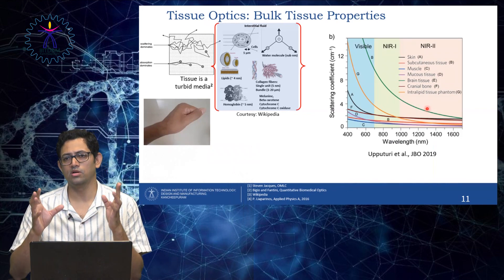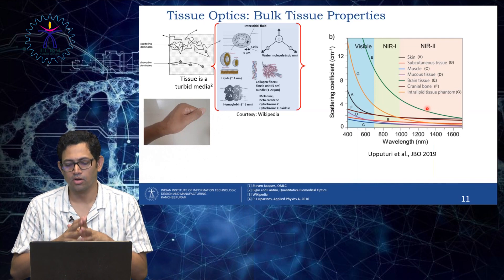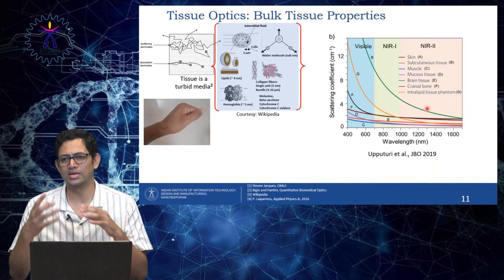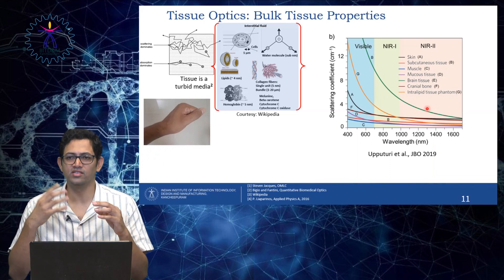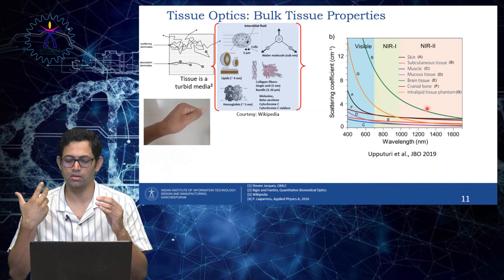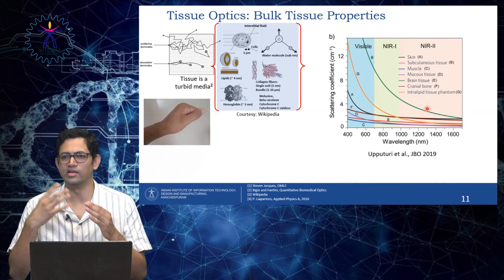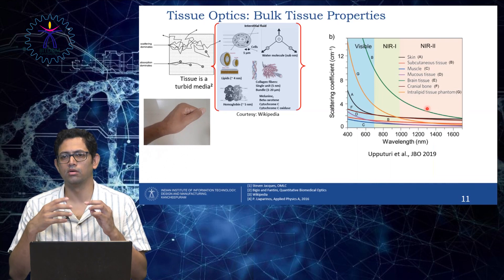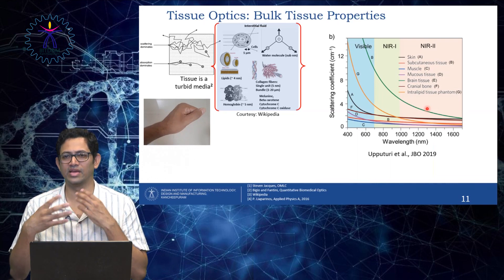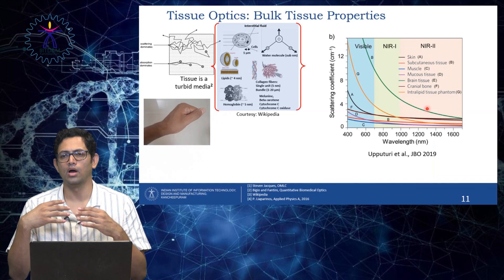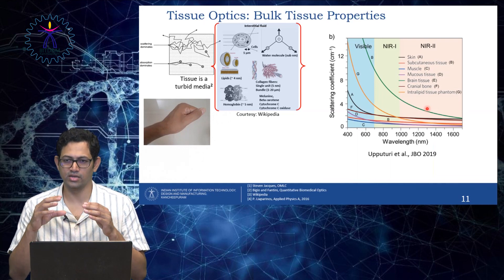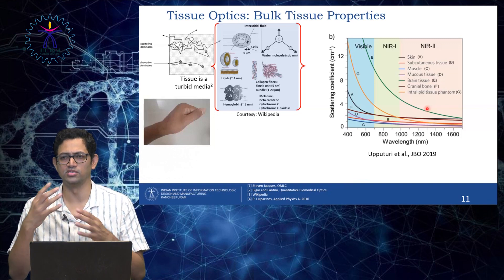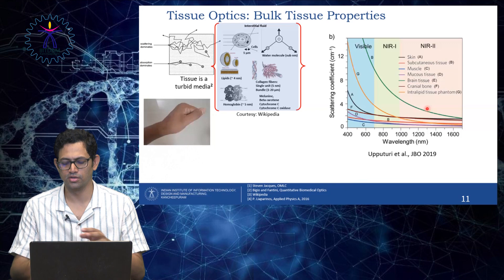That is what I wanted to cover about the scattering part of tissue optics. In the next lecture, we will talk about how to understand various optoelectronic components like lasers, LEDs, and photodiodes, and how to use them — because our course is more or less focused on applications. We will see how to read data sheets and how to use them for building optical systems for clinical diagnosis. Thank you.